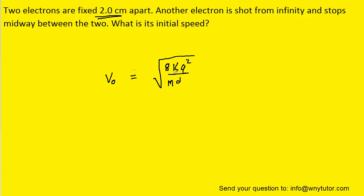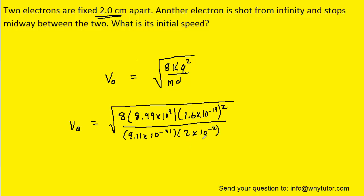We can then plug in the known values. Remember that k is a constant, q is the charge of an electron, m is the mass of the electron, and then d was that distance that the two electrons were separated by. Notice that we converted the d into the standard unit of meters by multiplying by 10 to the minus 2.